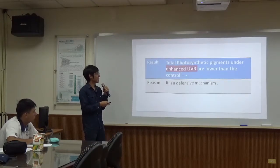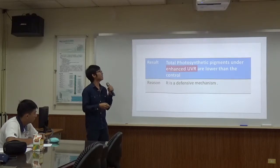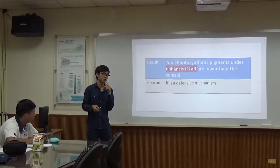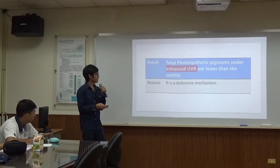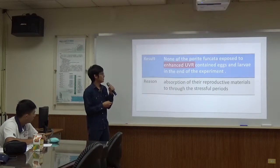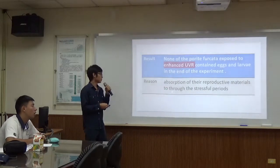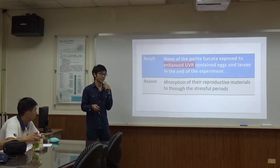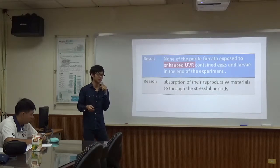Third, under enhanced UVR, the total photosynthetic pigments are lower than control, because the reduction in photosynthetic pigments suggests a defensive mechanism to reduce damage to the light harvesting system, like Photosystem II or Photosystem I. The next finding is that under enhanced UVR, fewer corals contain egg and larva by the end of the experiment, because coral can absorb their reproductive material like egg and sperm during the stressful period. But unlike other species, they don't completely deplete their sperm by the end of the experiment, suggesting coral has more resistance to enhanced UVR.